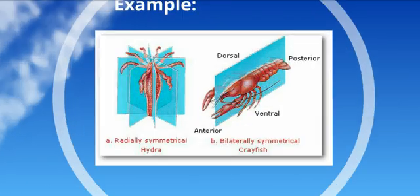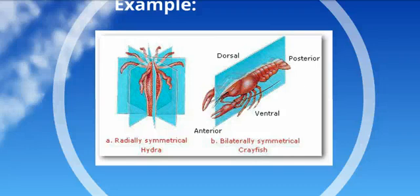Here's another example. Here's a hydra and a crayfish. The hydra is radially symmetrical, meaning that any cut through the center of the animal results in two identical sides. The crayfish, on the other hand, is bilaterally symmetrical, so if you cut it down the middle of its back, the left side mirrors the right side.